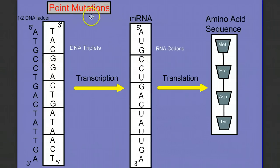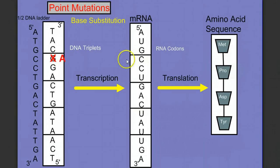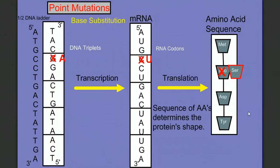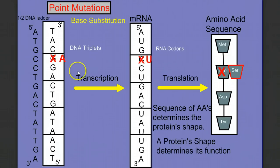Now let's look at what happens when we have a mutation — we're going to call these point mutations. The first one is a base substitution. If we substitute this guanine with an adenine, that means on our messenger RNA strand this cytosine will instead be a uracil. This code CCU, which coded for proline, becomes UCU — using your codon chart, UCU codes for serine. Changing the sequence of amino acids in a protein is important because the sequence determines the protein's shape. If we change the sequence, we change its shape, and if we change its shape, we change its function. So a single base substitution affected one DNA triplet, which affected one RNA codon, which affected one amino acid.